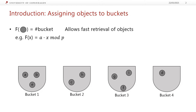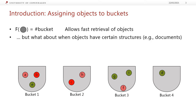Before we talk about our work, let's first talk about what semantic hashing is and what multi-index hashing is. A hash function is a function that takes an object and maps it to a bucket. When objects have certain structures — for example, documents where some are more related to each other than others — we would like the same type of documents to go into the same buckets.